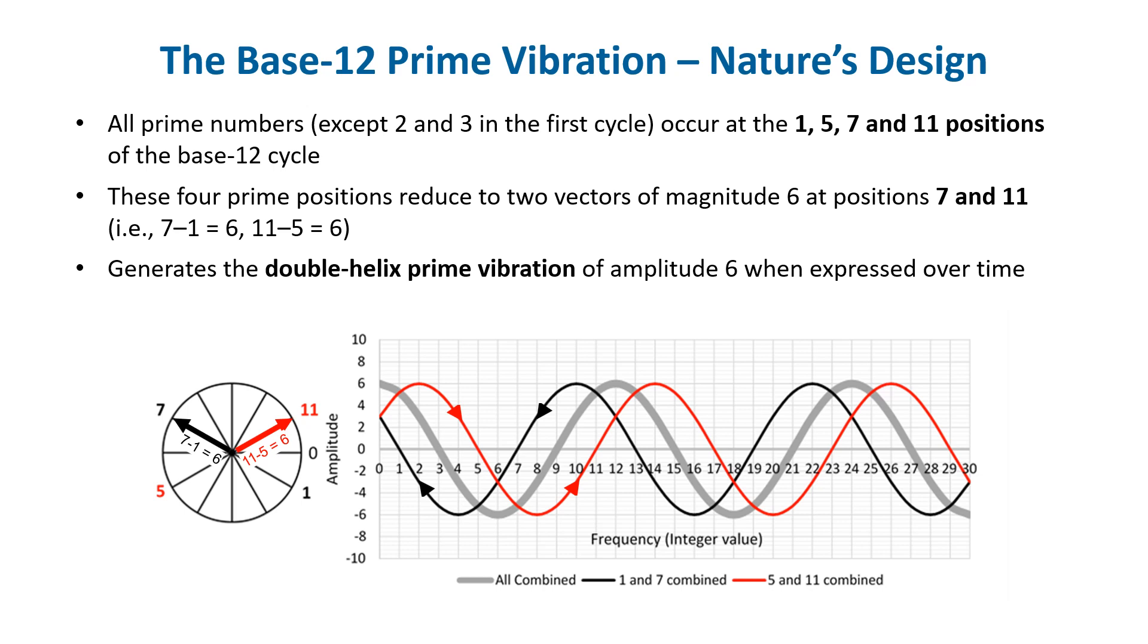This creates a base-12 circle of radius six with positions at seven and eleven alone, as shown here to the left, which, when plotted over time, creates the double helix prime vibration on the right. The black wave is the vibrational pattern position seven makes, and the red wave is that of position eleven.